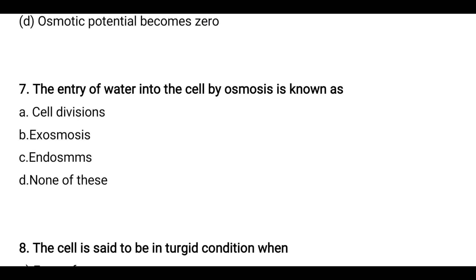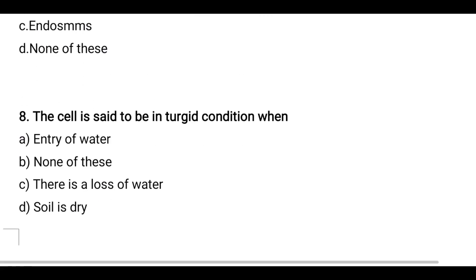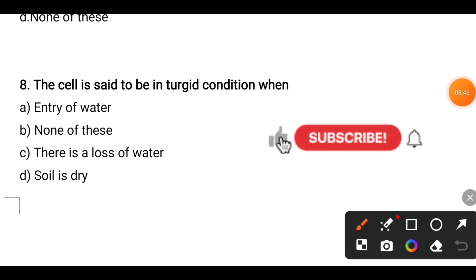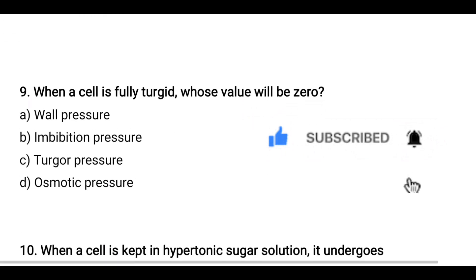Next question: The entry of water into the cell by osmosis is known as — options are cell division, osmosis, or none of the above. The correct answer is endosmosis. 'Endo' means into, so endosmosis is the entry of water into the cell. Next question: A cell is said to be in a turgid condition when — options are entry of water, none of these, loss of water, or soil is dry. The correct answer is when water enters into the cell.